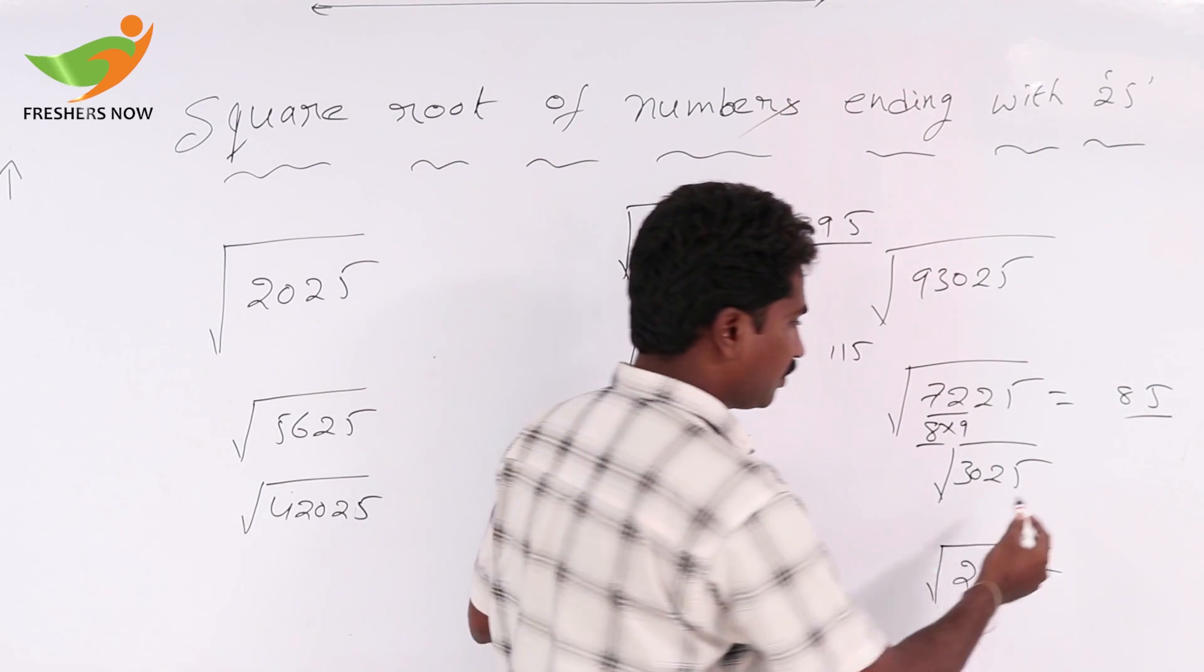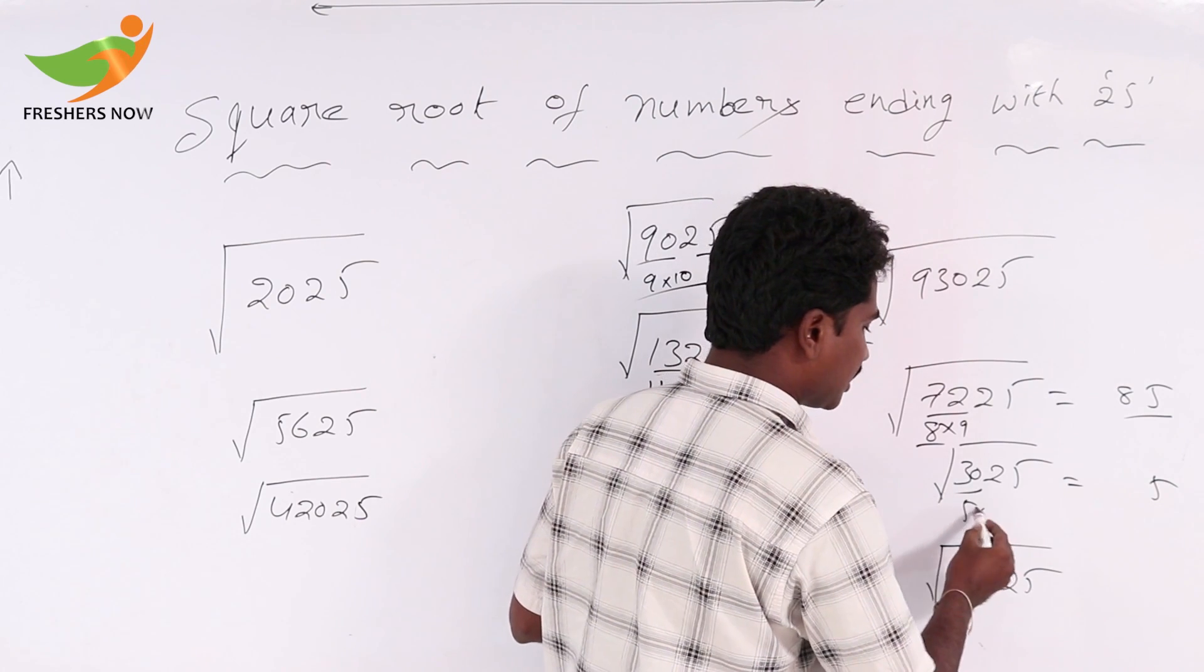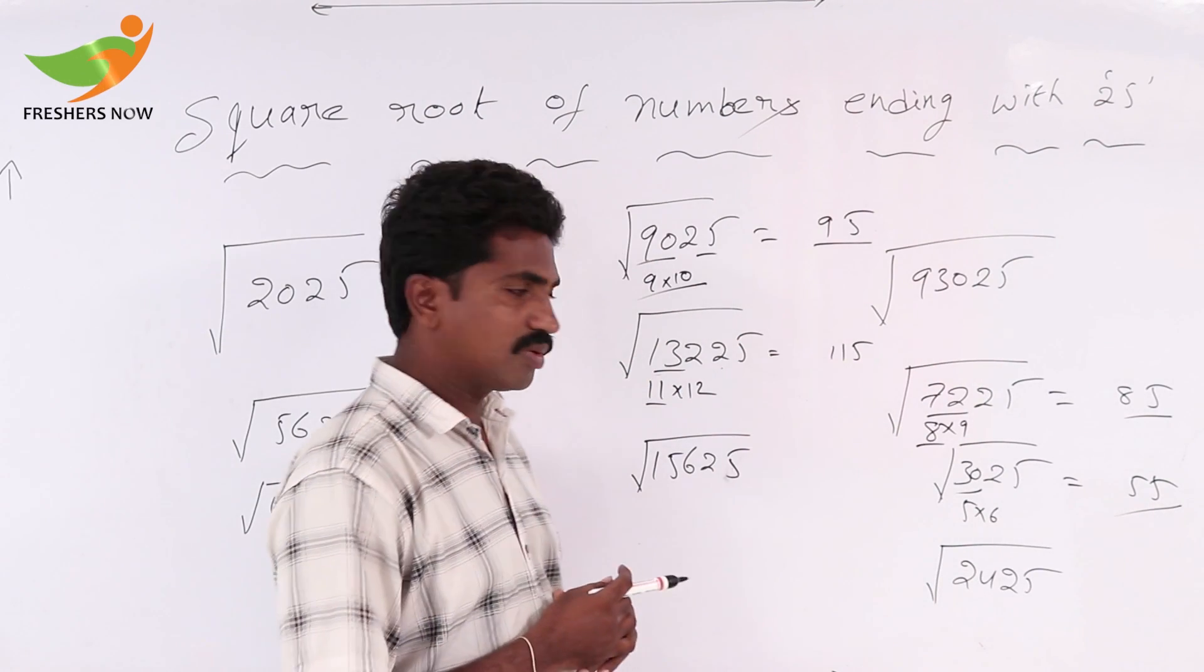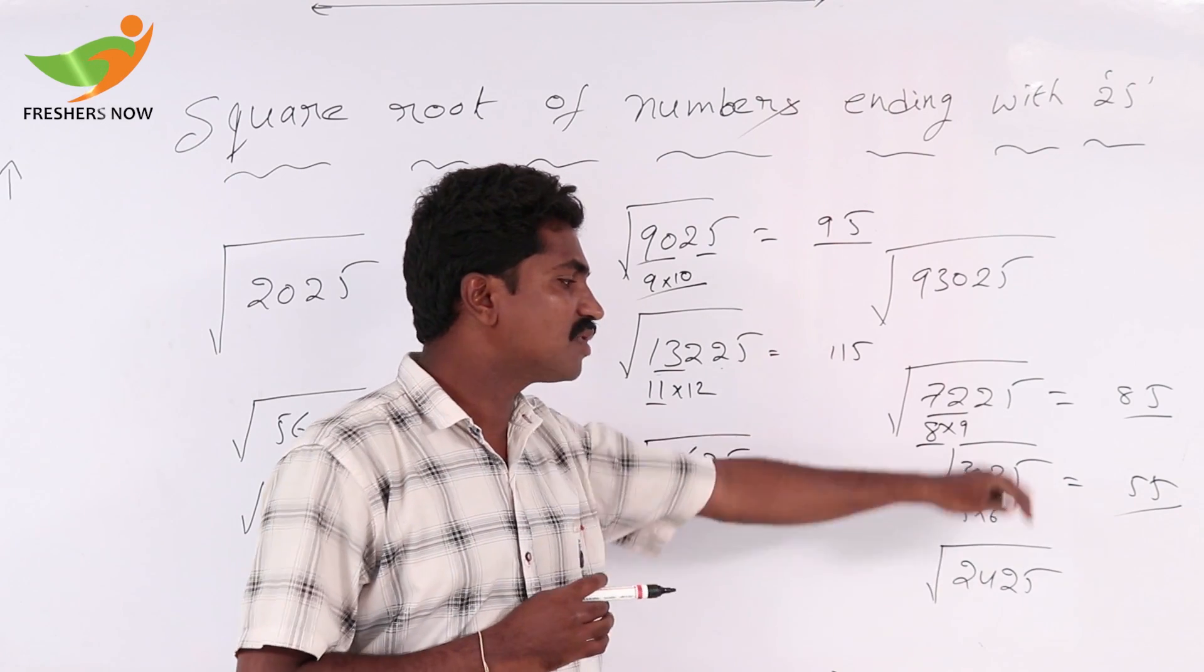If you take 3025, 25 is 5. 30, 5 x 6 here. So small number is 5. Square root of 3025, that value is 55.